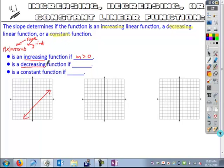If it's a decreasing function, your slope is going to be negative, m < 0. If this is the case, your graph is going to be moving down and to the right.